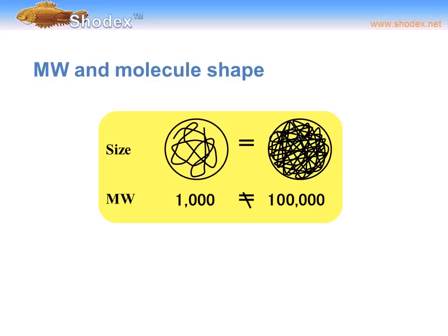For example, we have on the left a compound with a molecular weight of 1,000 — a linear sugar with very poor folding properties and poor intermolecular attractions. On the right, we have a compound with a molecular weight of 100,000 — a protein that can fold very efficiently into a small volume. Thus, the linear sugar on the left is contained in the same volume as the protein on the right.